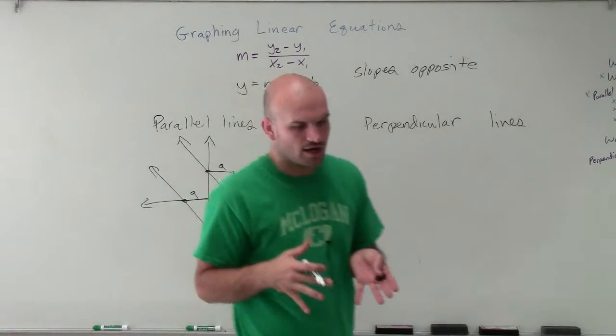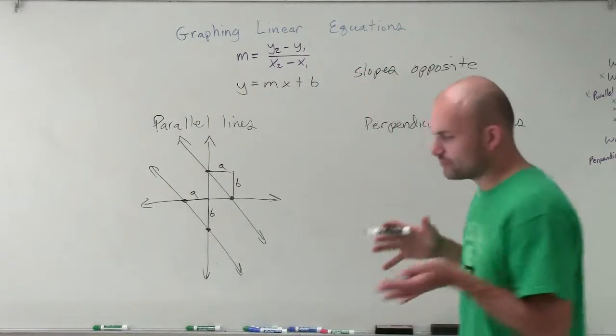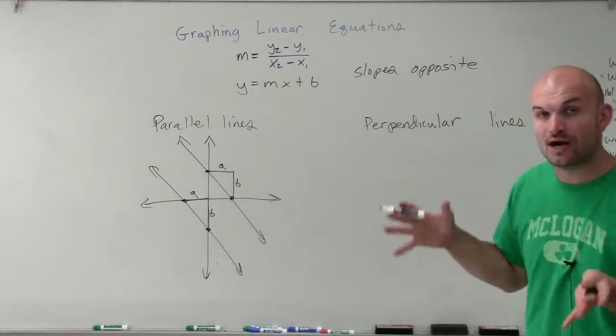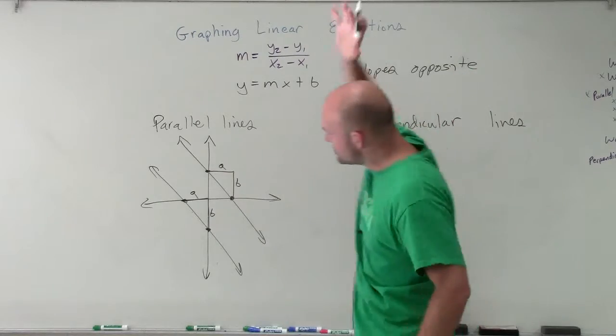The ratio of b over a, our rise over our run, was exactly the same. And these never, ever intersect.